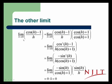The other limit, the limit as h goes to 0 of cosine of h minus 1 over h. In order to deal with that one, we multiply by the conjugate cosine of h plus 1 over cosine of h plus 1. The numerator becomes cosine squared of h minus 1. The denominator is h times cosine of h plus 1.